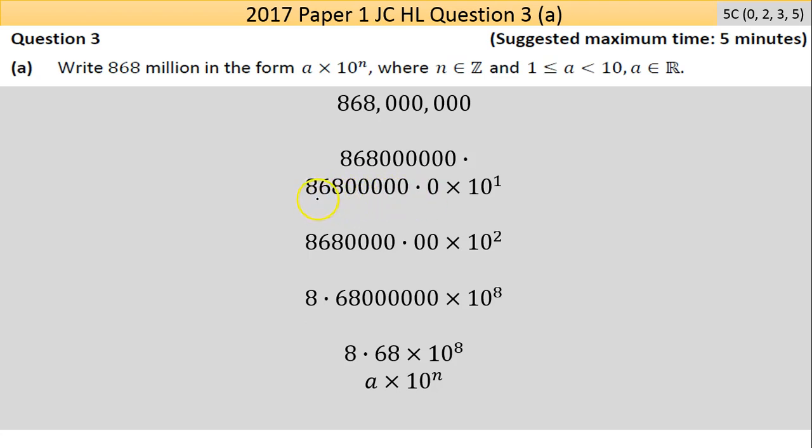That's 86,800,000 times 10, which equals 868 million. I'll do it again—move it once more. Now there are two zeros there. This number is getting smaller: it's now 8,680,000 times 100, which is the same thing as 868 million.